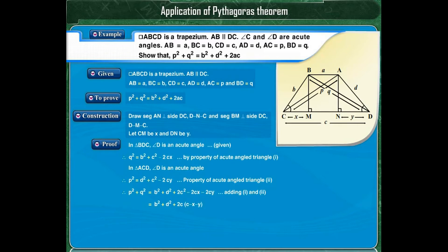From the figure, C minus X minus Y is equal to MN, and MN is equal to AB, that is equal to A. Therefore, P squared plus Q squared is equal to B squared plus D squared plus 2AC.